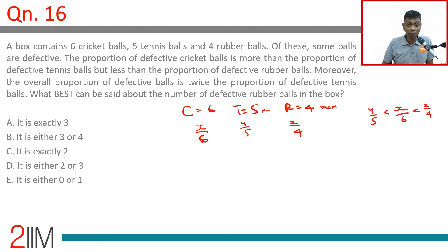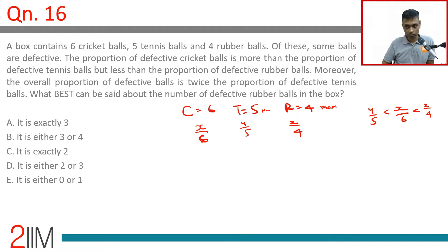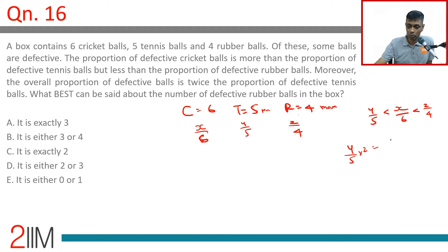Moreover, the overall proportion of defective balls is twice the proportion of defective tennis balls. The defective tennis ball proportion is y/5, so twice of that gives us: 2(y/5) = (x + y + z)/15.